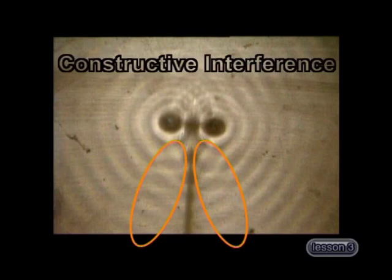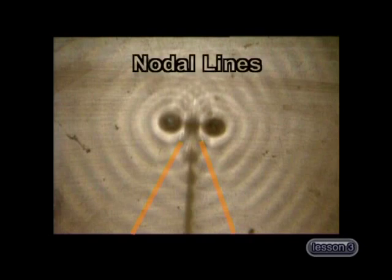In between these regions of destructive interference, there are regions where the light and dark shadings of the ripples are very clear. These are regions where constructive interference has happened, and so the waves have added together at these positions. This constructive interference also takes place along regularly spaced straight lines that radiate outwards from the source. We can draw lines on the diagram to show the regions of constructive interference. These lines are called nodal lines.